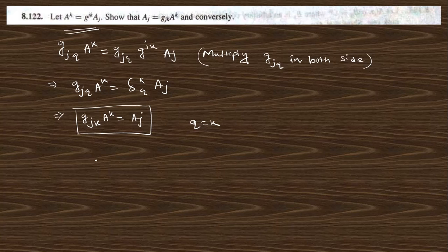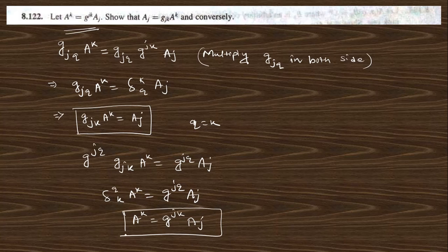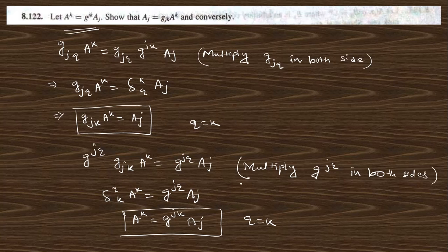To prove this relation inversely, we multiply g^jq on both sides: g^jq a_j equals g^jq times g^jk a_k. This gives a delta function delta^q_k, so when q is equal to k, the relation is proved in both directions. Multiply g^jq on both sides to complete the proof.